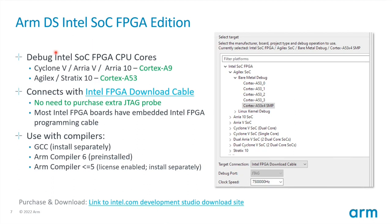You can debug A9s in the Cyclone 5, Arria 5, or Arria 10, as well as the A53 in Agilex and Stratix 10 devices. It includes native connection to the Intel FPGA download cable with no need to purchase extra probes. ARM compiler version 6 comes pre-installed with DS, but you can also plug in earlier versions like version 5, as well as GCC and LLVM compilers.